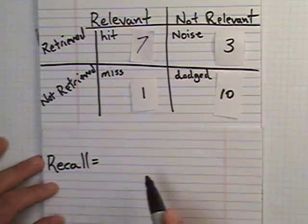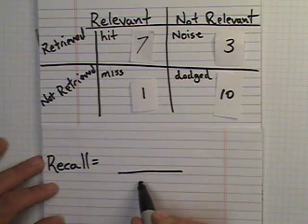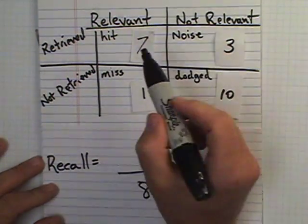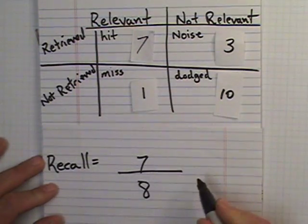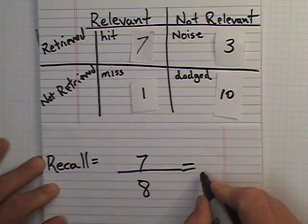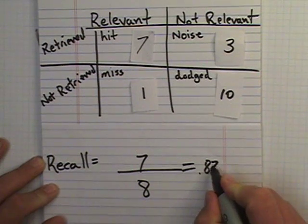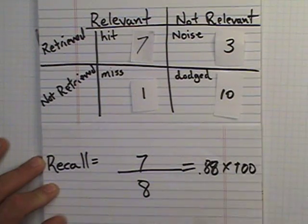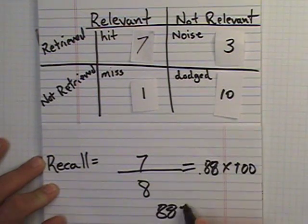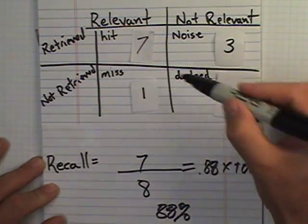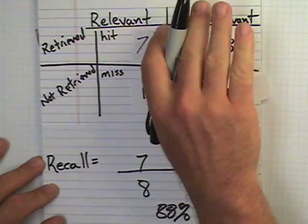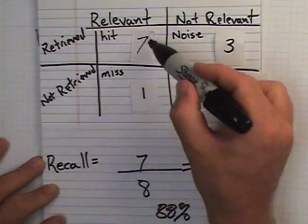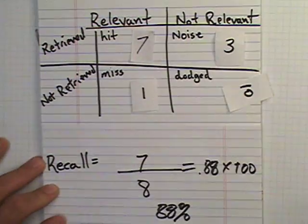Remember, there's always eight. That's the hits plus the misses, everything relevant in the set, eight. Seven over eight, .87 or .88, times 100, gets you 88%. So in this case, remember, we're only dealing with the relevance. Recall is 88%. We found 88% of the total number of relevant books.